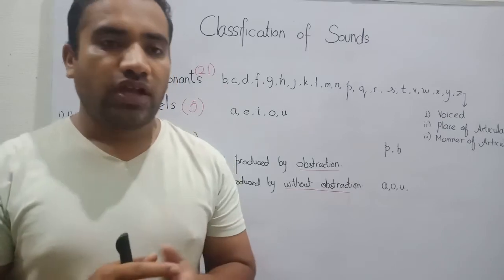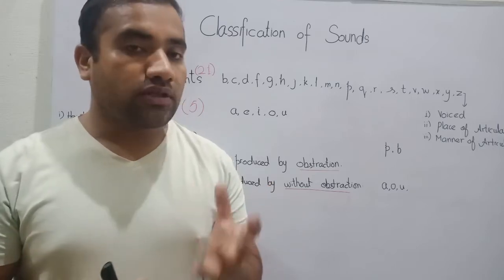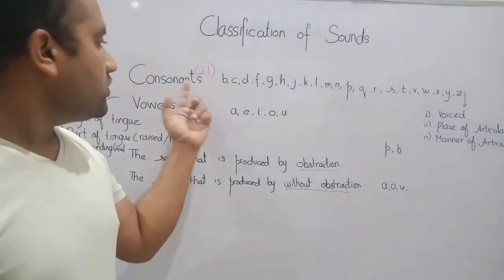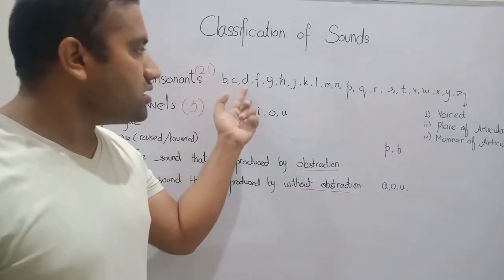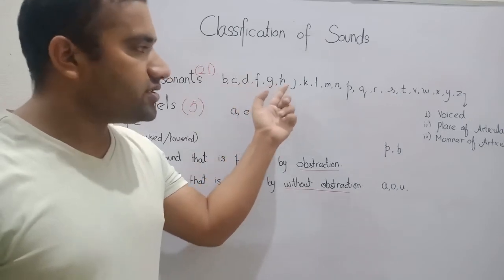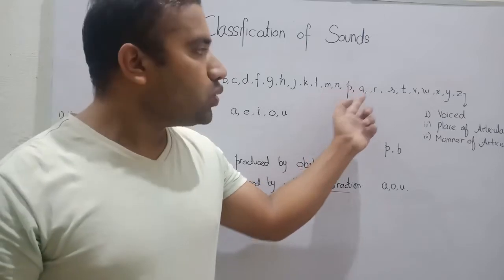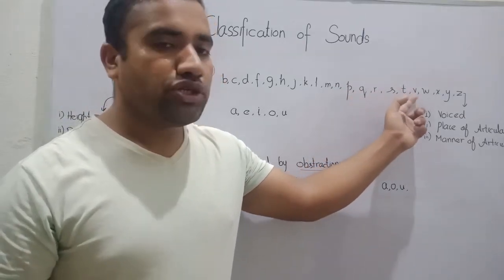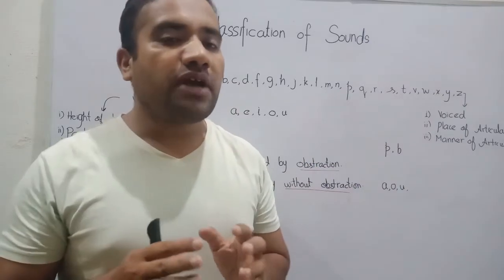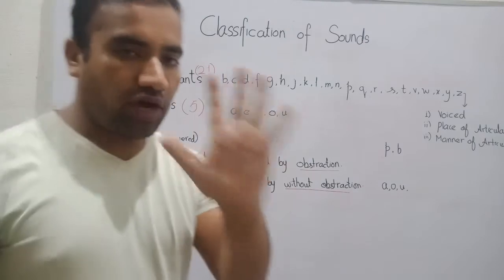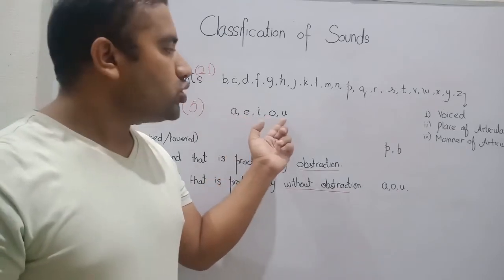The question is: what are the consonant sounds, and what sounds can we say are consonants? The consonant sounds in English language are 21 in number: B, C, D, F, G, H, J, K, L, M, N, P, Q, R, S, T, V, W, X, Y, and Z. And we have another set — the vowels — which are five: A, E, I, O, U.